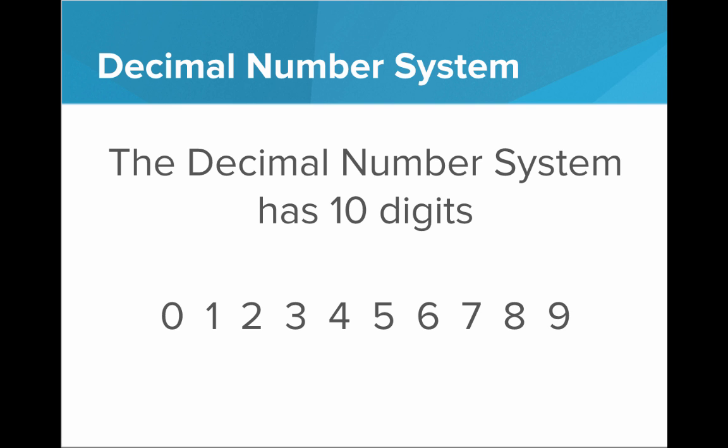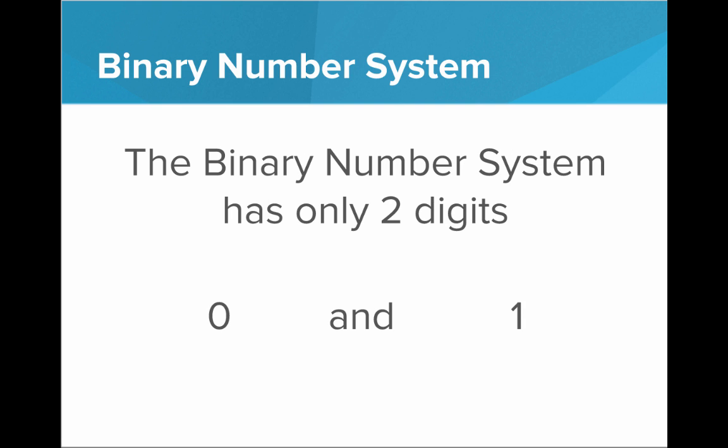But this is not the only number system. Turns out, we can also represent numbers using only two digits, and that's the binary number system. So the binary number system has a base of 2, only two digits, 0 and 1. And this is how computers represent numbers, at the very base level, using only 0s and 1s. And we'll see how this is possible in a minute.